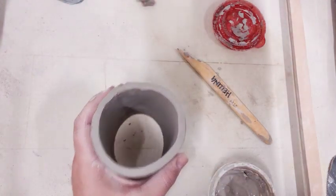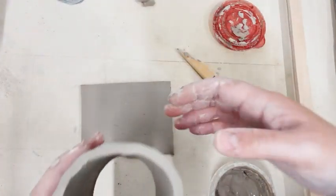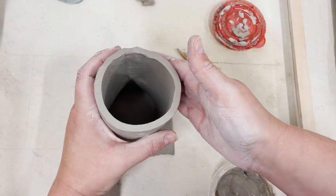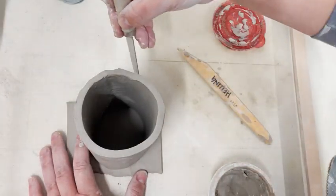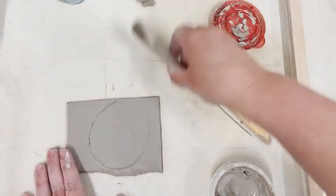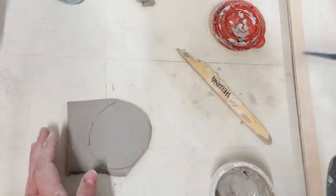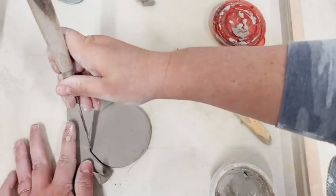Step seven: place the cylinder on a slab and trace and cut it out. So I saved the extra bit of my slab from the beginning. I'm going to use that. But if you don't have that, you're going to have to roll a new one. Trace that.